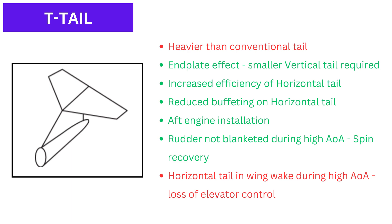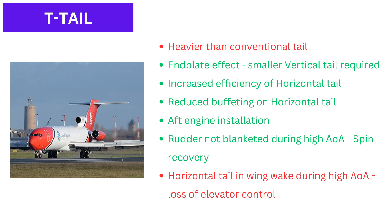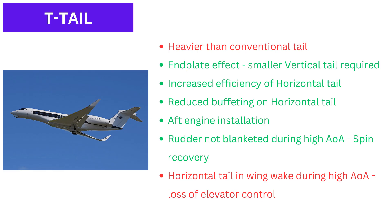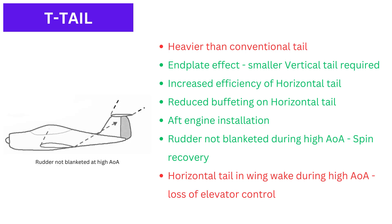T-tail: This type is usually heavier than the conventional tail because the vertical tail needs to be made strong enough to carry the horizontal tail. An advantage of this type is what is known as the end-plate effect, which allows for a smaller vertical tail size. The end-plate effect prevents spilling of the air around the tip of the lifting surface. By placing the horizontal tail on top of the vertical tail, it is no longer in the wing wake or prop wash, which increases the efficiency of the horizontal tail. This also reduces buffeting. Another advantage is that the engine pods can be mounted on the aft fuselage, which reduces noise in the cabin. This type is good for spin recovery.